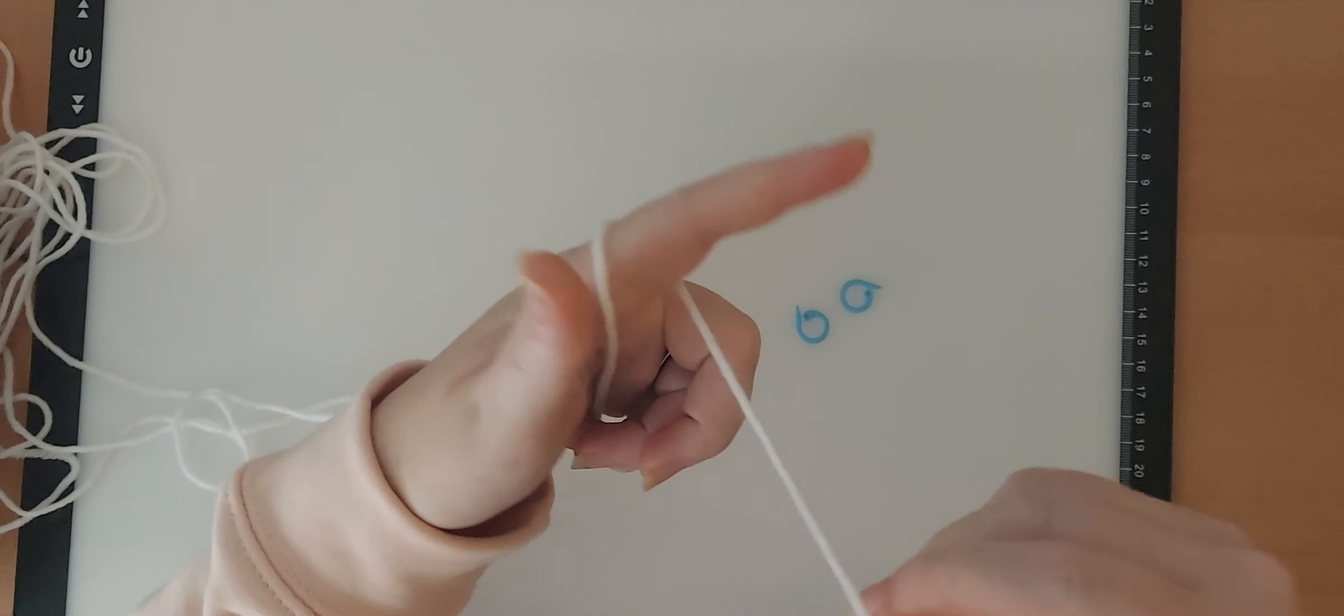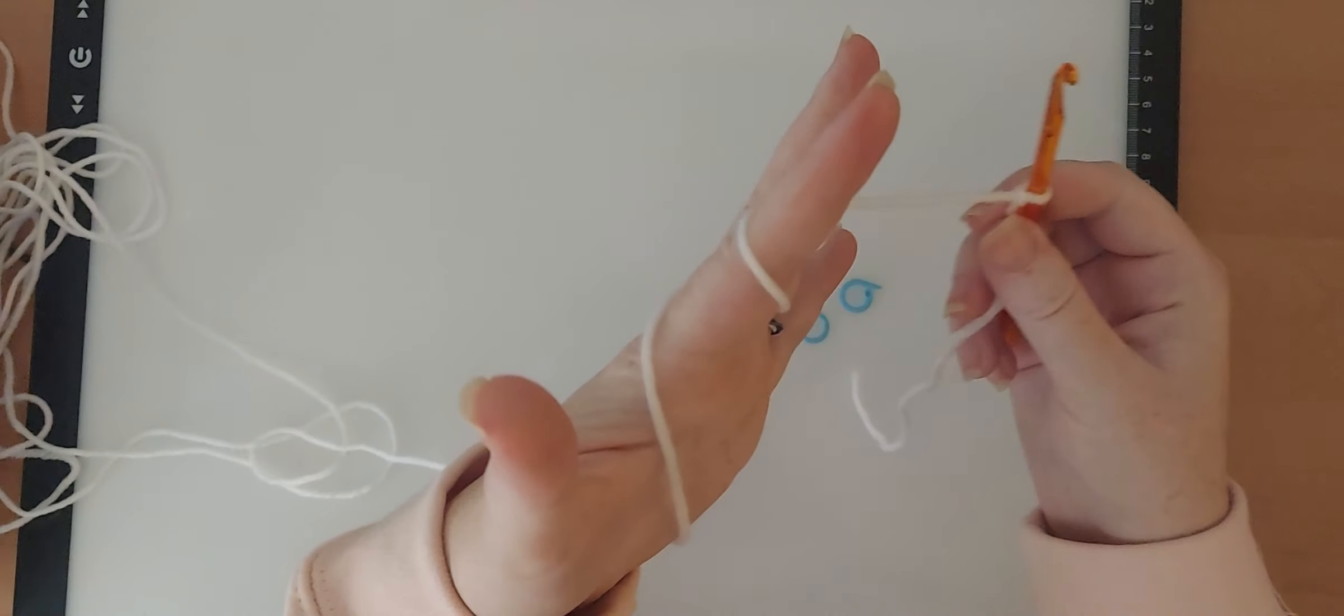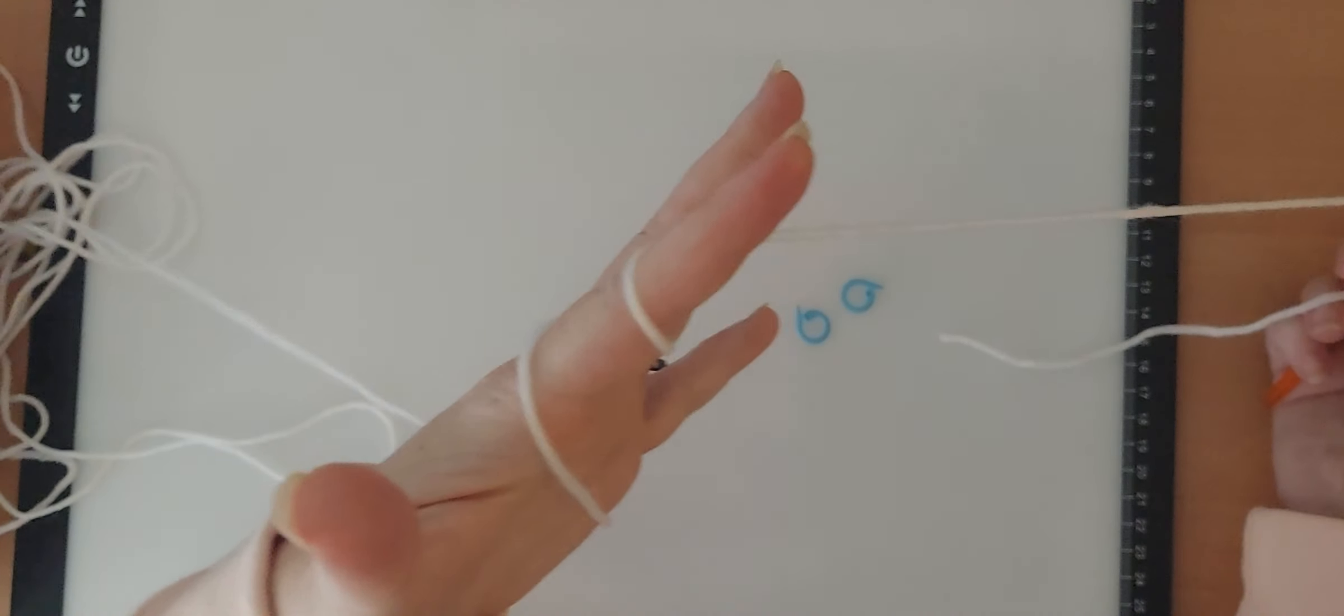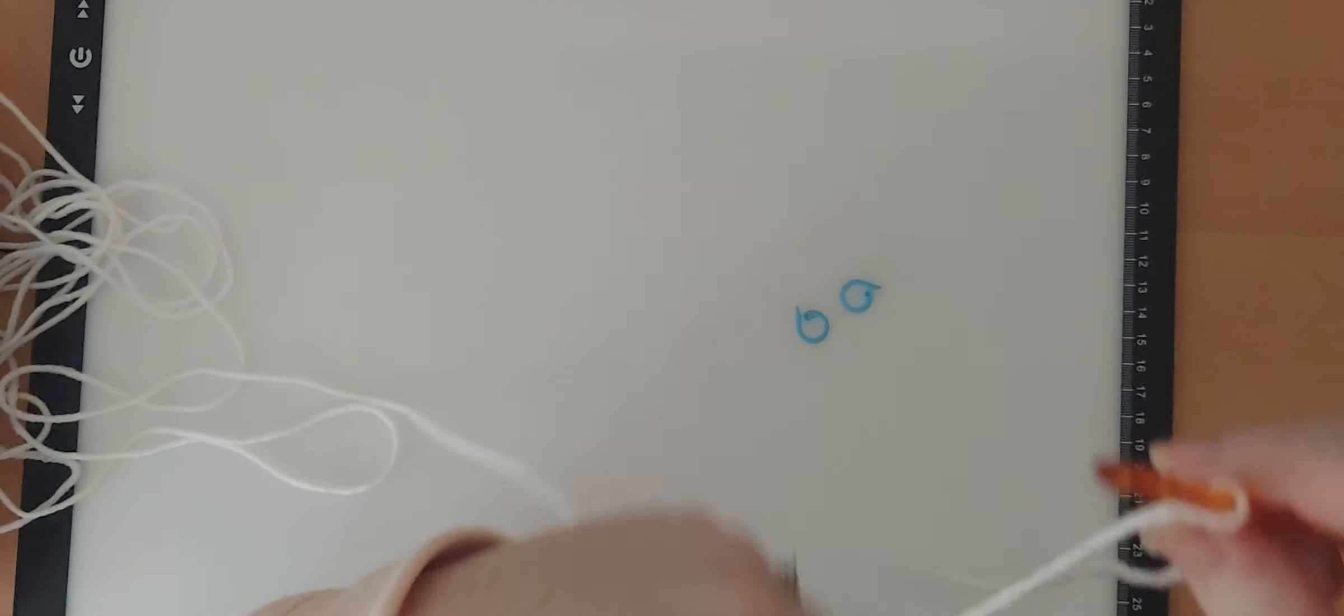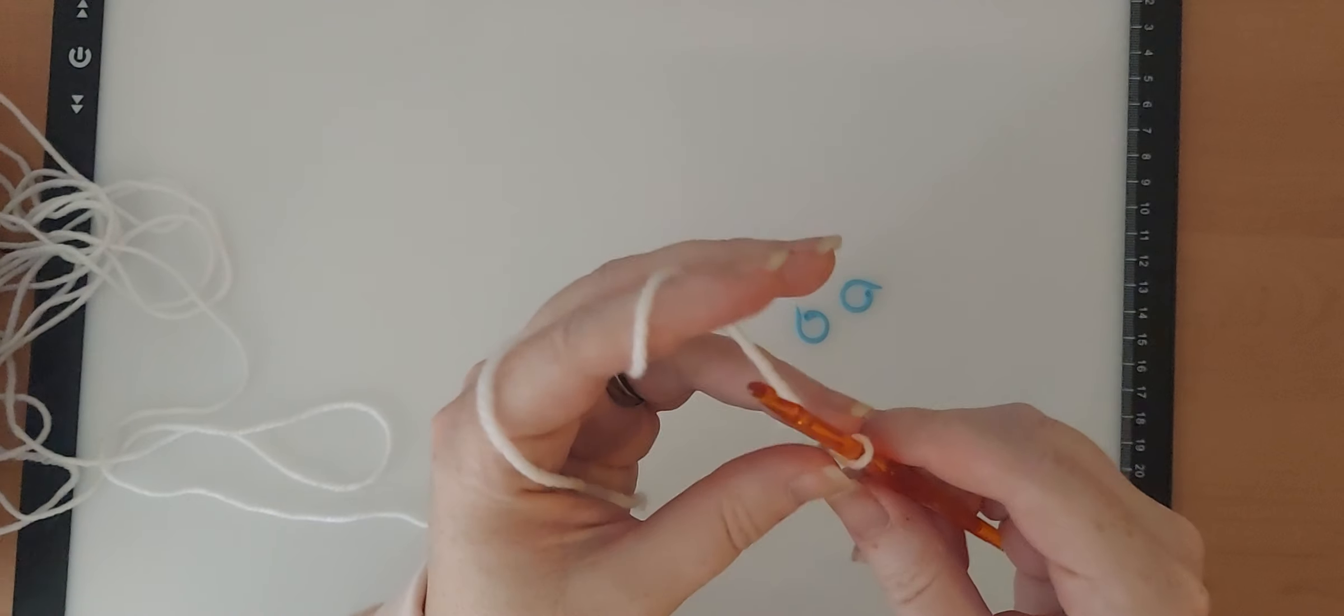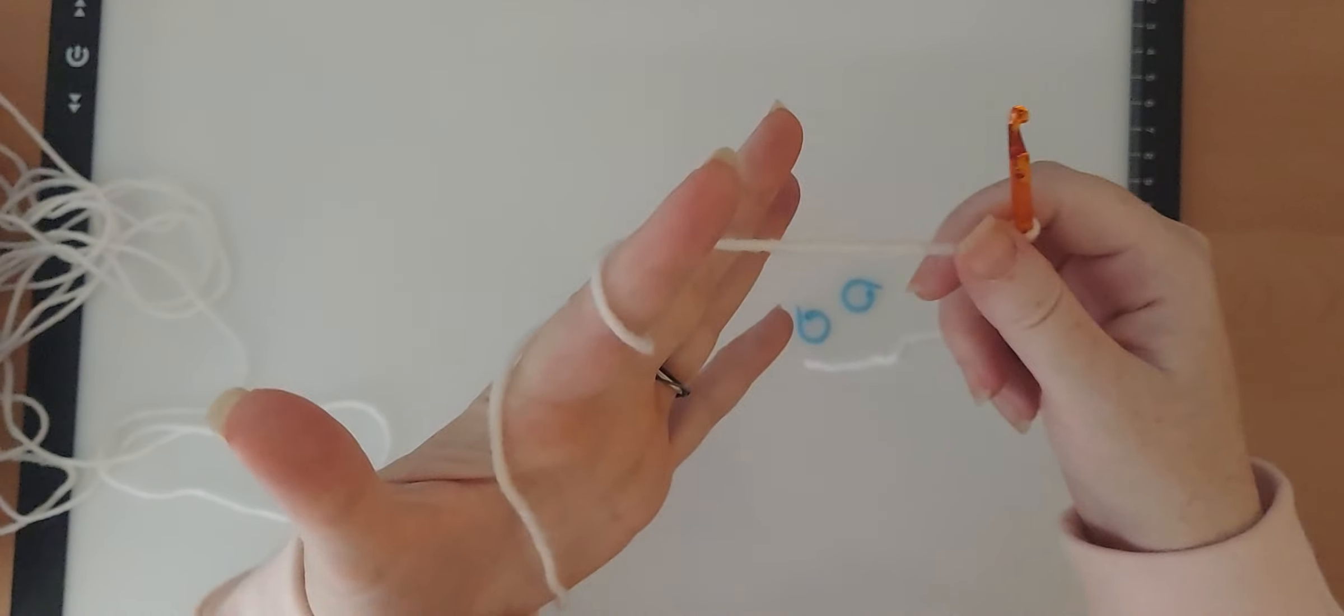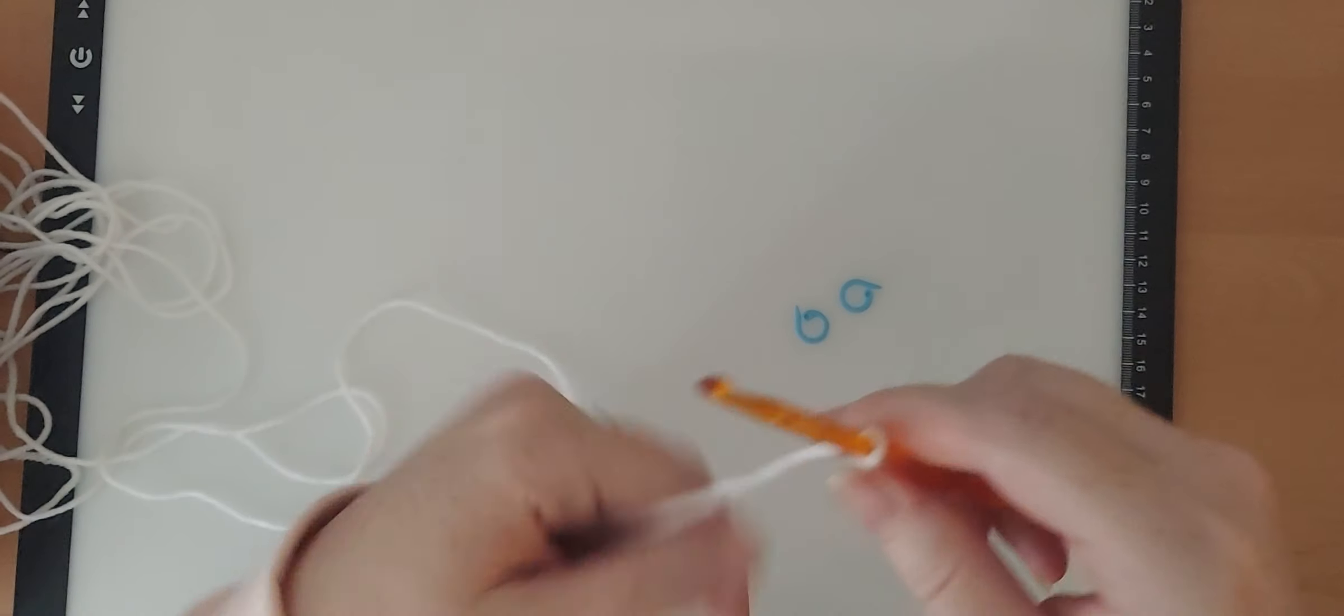What I like to do is lay the yarn in my hand like this—one, two—and then if you watch, if you pull it, it should slide relatively easily. You can stop and readjust at any time. Again, it's just one, two, and then it'll pull the way you need it to.